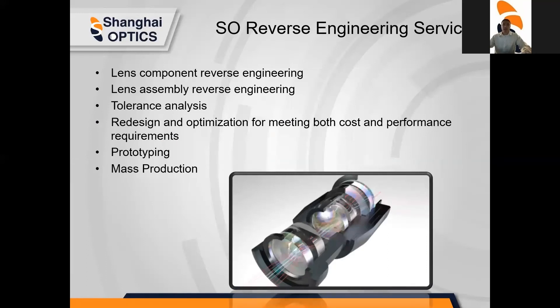The services included with reverse engineering are: lens component reverse engineering, lens assembly reverse engineering, tolerance analysis, and redesign and optimization for meeting both cost and performance requirements. Once you're ready for prototyping, we can help you there as well. Once it passes the prototyping phase, that leads to mass production, and we'll be able to handle those high volumes for you.